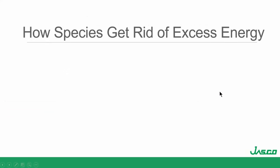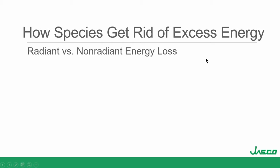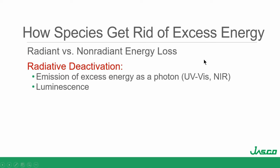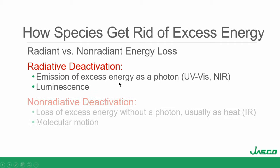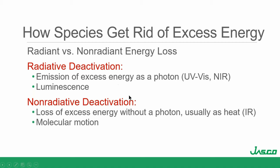To understand luminescence, we need to first understand how molecules get rid of excess energy — and that can be radiant or non-radiant energy loss. In radiative deactivation, molecules lose energy as a photon of light — and this is luminescence. But there are competing processes, and non-radiative deactivation is always there: it's the loss of energy without a photon, usually as heat or some kind of molecular motion.